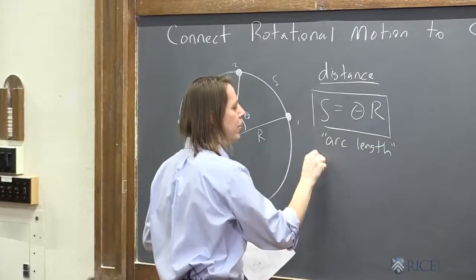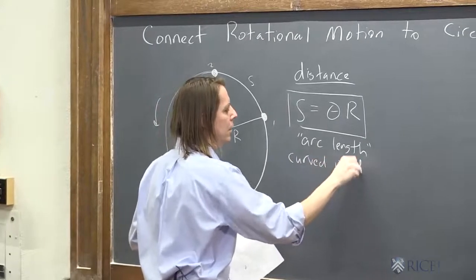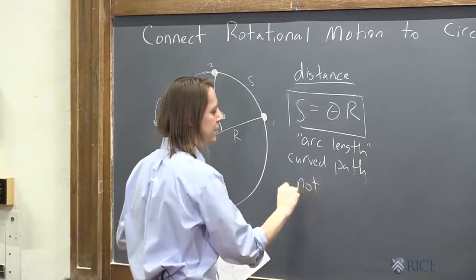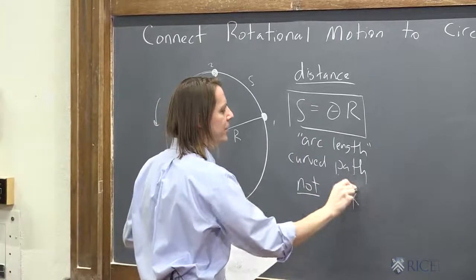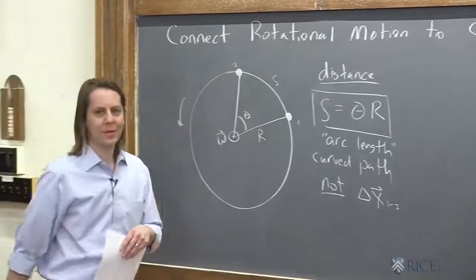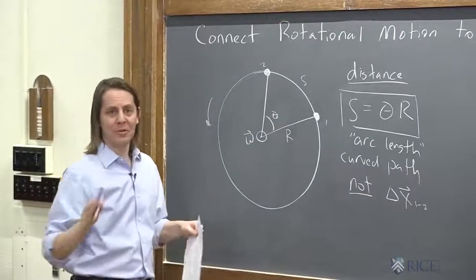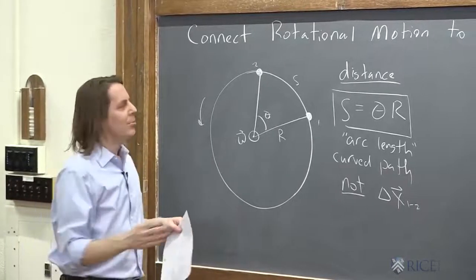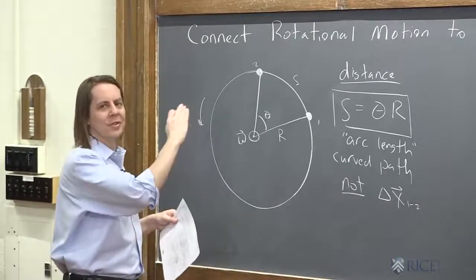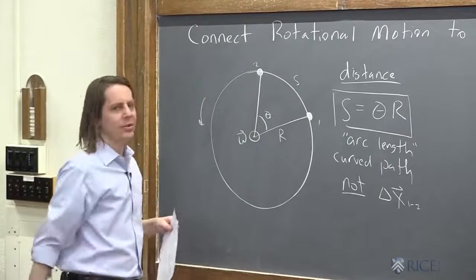It's this path. It's the length of that path going around the angle. It is a curved path. It's not even a straight path. And it is not the displacement from 1 to 2. So we're not going that far in translational motion, back to day 1. But in translational motion, we talked about the distance of a path. So it's like the distance of this curved path.